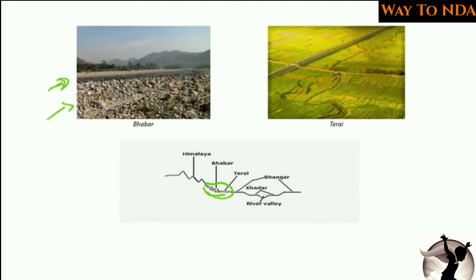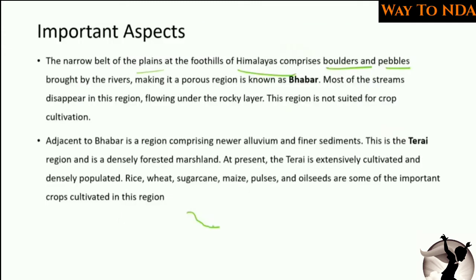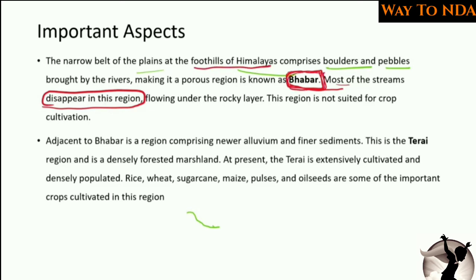In the Bhabar area, most of the streams disappear underground into the rocky layer. The Bhabar is the outermost, northernmost zone at the foothills of the Himalayas. It consists mainly of boulders and is not suited for crop cultivation.